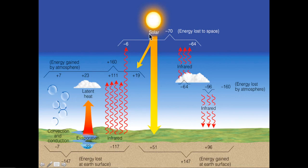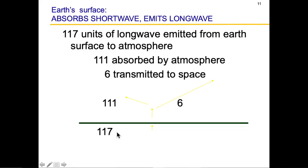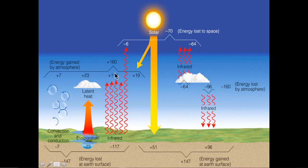The earth receives 70 units of radiation from the sun and emits 111 units of long wave radiation. You may be confused that 70 is absorbed but 111 is released — the reason is these are different forms: short wave in, long wave out. So 117 units of long wave radiation are emitted from the earth's surface to the atmosphere; out of that, 111 is absorbed by the atmosphere and 6 goes directly out to space.